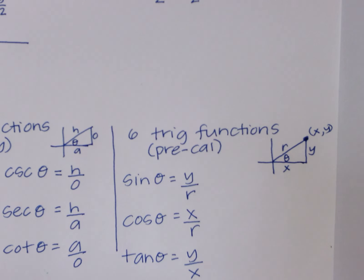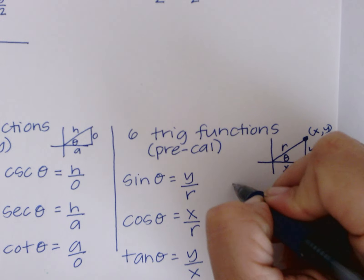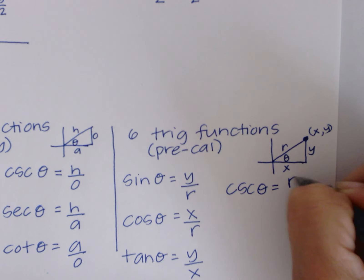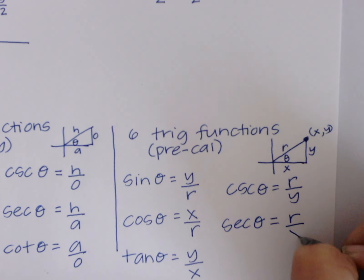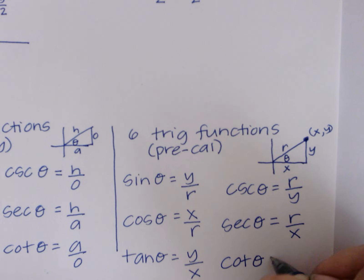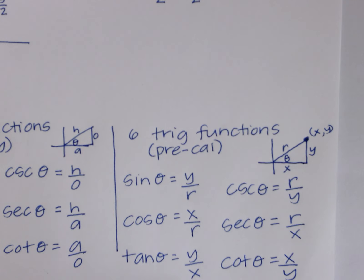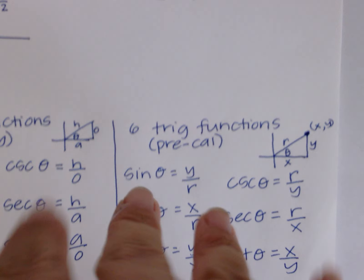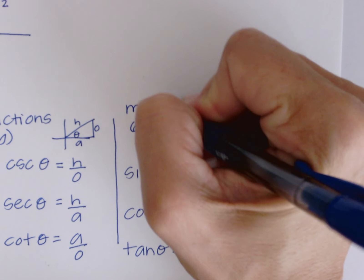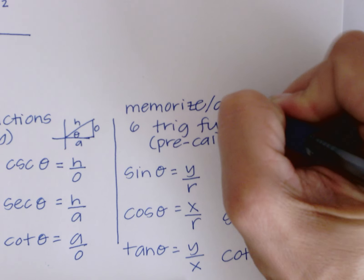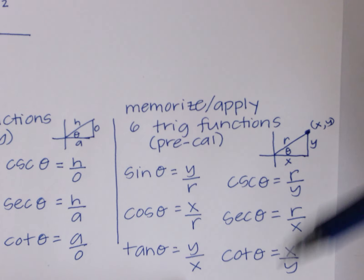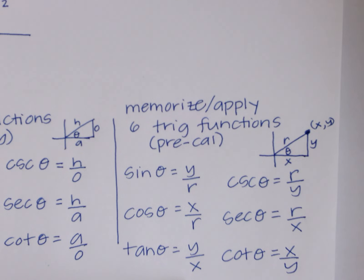For the reciprocal functions, we just flip the fractions — I call it the 'reflippical.' Cosecant = r/y, secant = r/x, cotangent = x/y. Make sure you get all of these memorized. For tonight's homework you can reference these notes, but after that they need to be in your brain — that's how important they are.